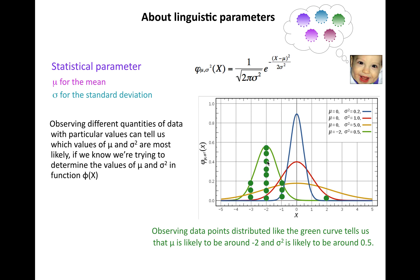If we've observed data points distributed like this, that tells us the green curve values are probably most likely. So μ is likely to be around -2 and σ² is likely to be around 0.5, because those are the values that best fit the observable data I've seen.